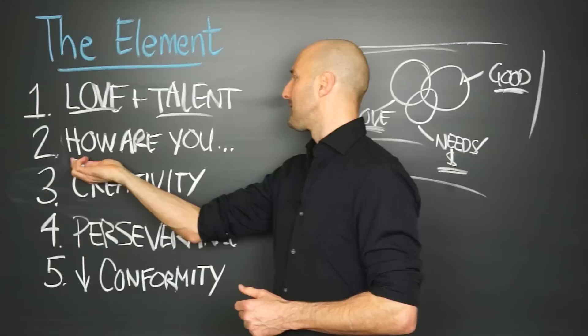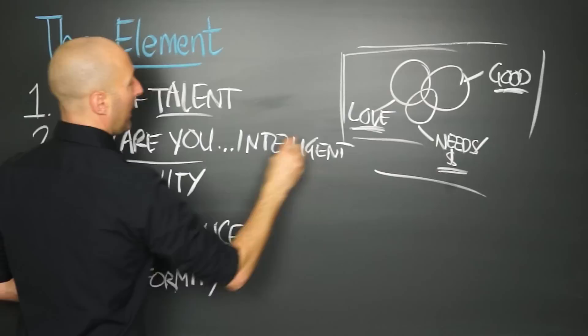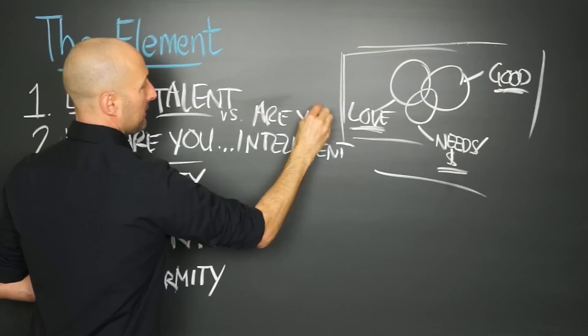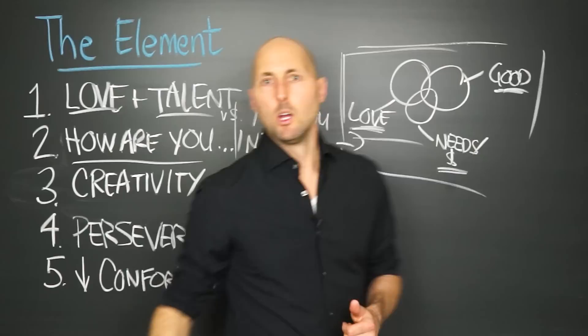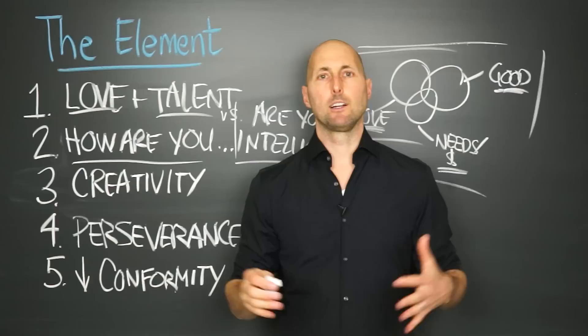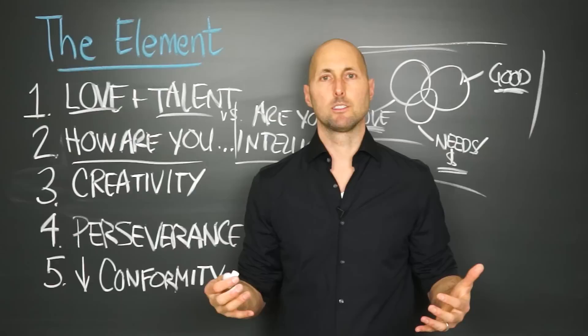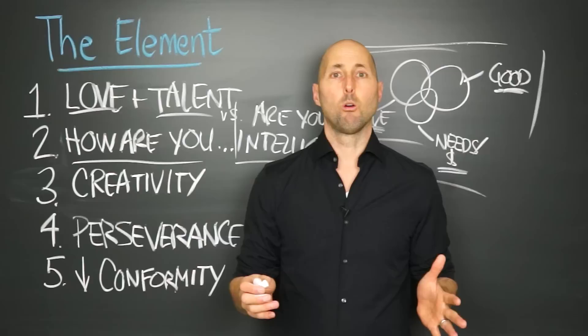The second one is, how are you intelligent? Now, that's a very different question than, are you intelligent? Are you intelligent? That sounds a little finite. But if you say, how are you intelligent, you're asking a very different question. You're going to get a very different set of answers. So Sir Ken goes off on the typical IQ test, Myers-Briggs, etc. And he says, those are just ways to measure a finite level of intelligence. But each of us has a unique constellation of strengths and intelligences. And the question is not, are you intelligent? Yes or no. The question is, how are you intelligent?